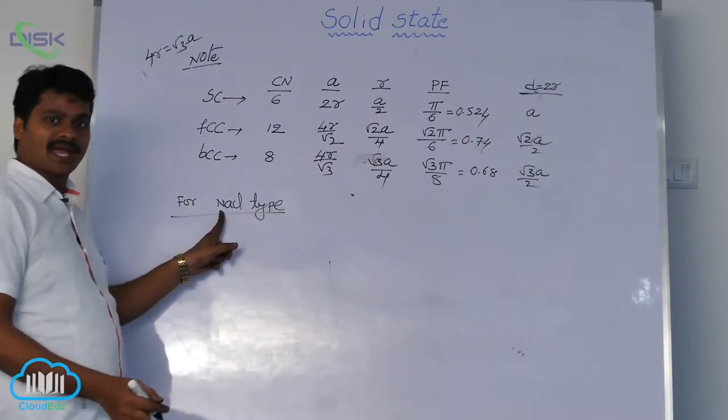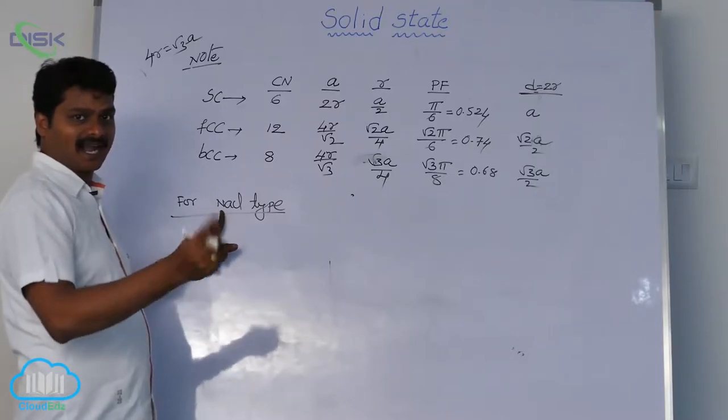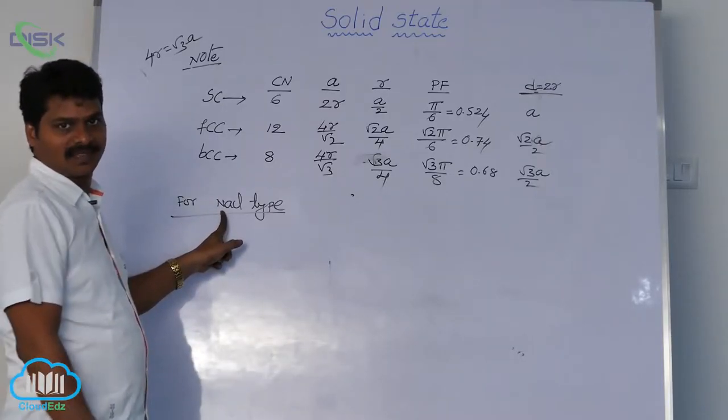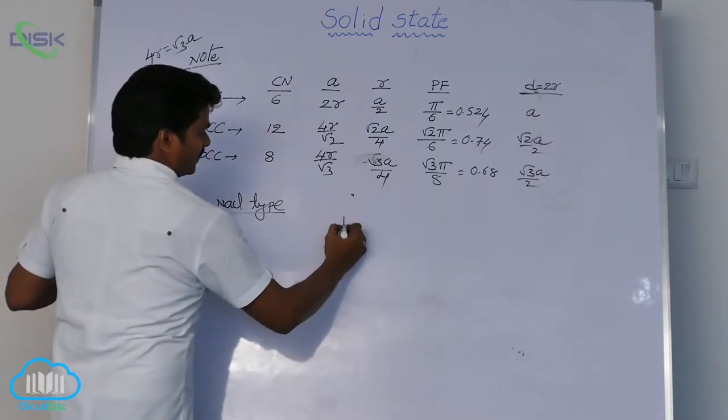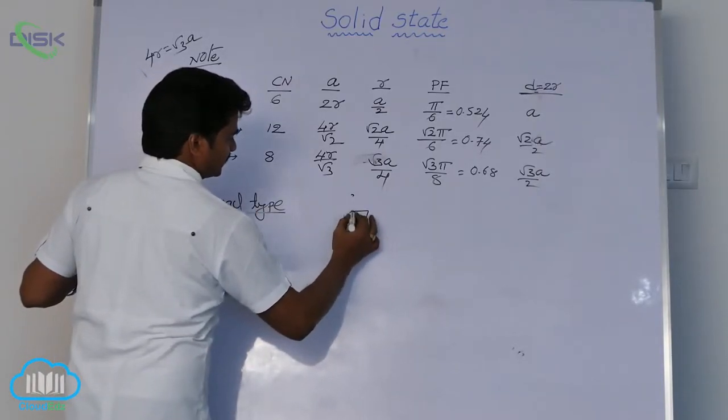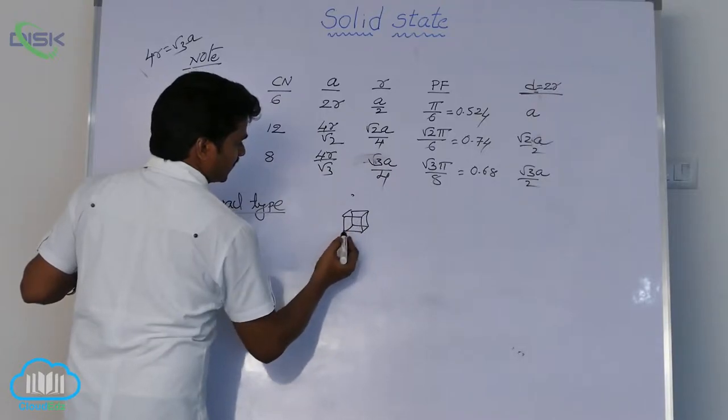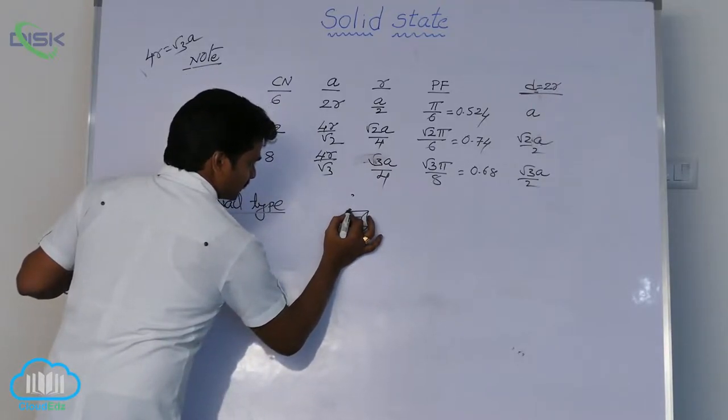Here, sodium ion and chloride ion in NaCl lattice are alternately arranged. That's why, see, if you take a NaCl lattice like this, suppose it is chloride ion, but inside there is sodium ion.